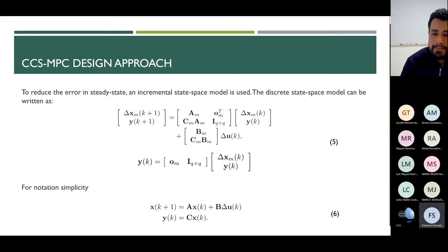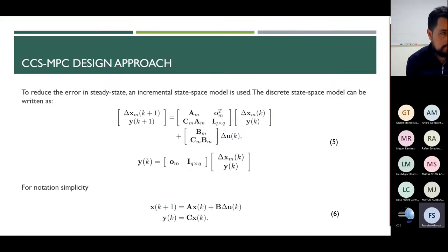To reduce the error in steady state, an incremental state space model is used. The discrete state space model can be written as in Equation 5. For notation simplicity, Equation 6 refers directly to the augmented model of the system.